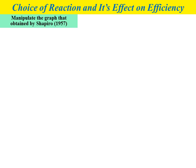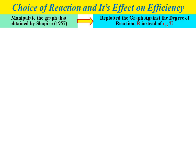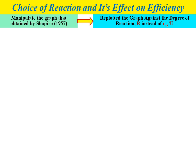We need to refer to the graph obtained by Shapiro 1957. We need to manipulate the graph where we need to replot the graph again with degree of reaction R instead of Cy2 divided by U. If you look at the graph obtained by Shapiro 1957, the graph shows the relationship in terms of efficiency versus Cy2 divided by U, with data for total-total efficiency for different values of stage loading factor.